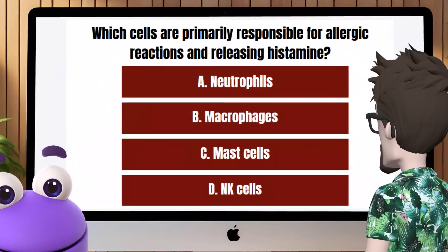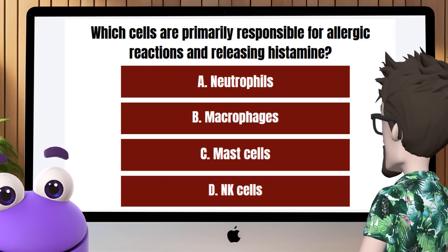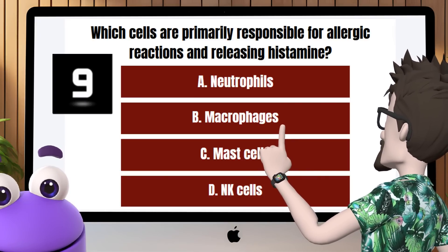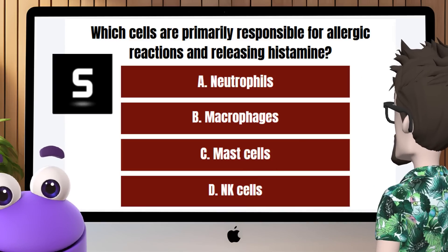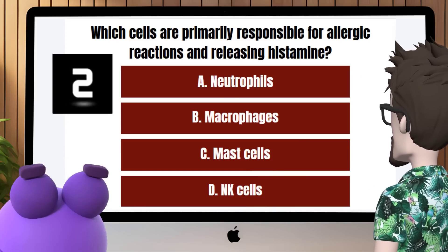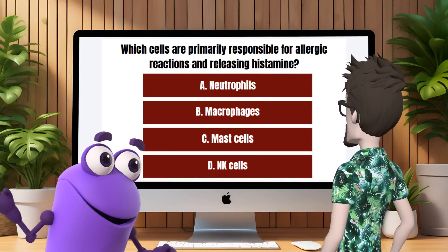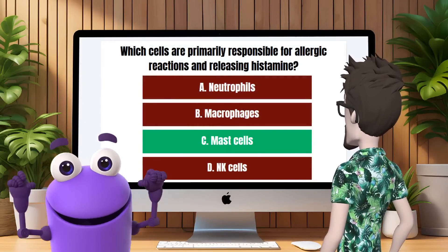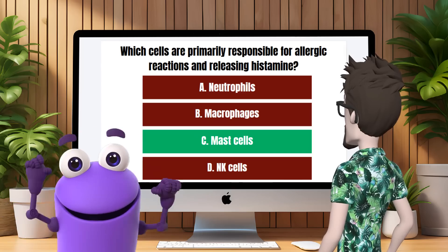Question 6: Which cells are primarily responsible for allergic reactions and releasing histamine? C. Mast cells release histamine and other mediators that contribute to allergic reactions and inflammation.